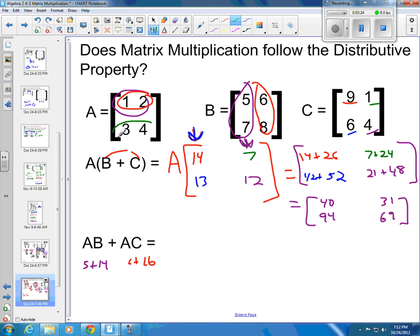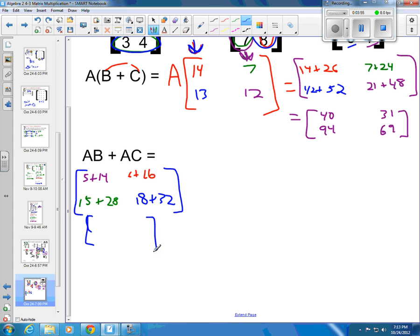Then I'm going to take second row times first column. So 3 times 5 is 15, and 4 times 7 is 28. And then the last one here, I'm going to take the second row times the second column. So 3 times 6 is 18, and 4 times 8 is 32. Okay, that's my first one, that's AB. So AB is actually, let's extend my page a little bit so I'm not squeezing in here. 5 plus 14 is 19. 15 plus 28 is 43. 6 plus 16 is 22, and 18 plus 32 is 40.